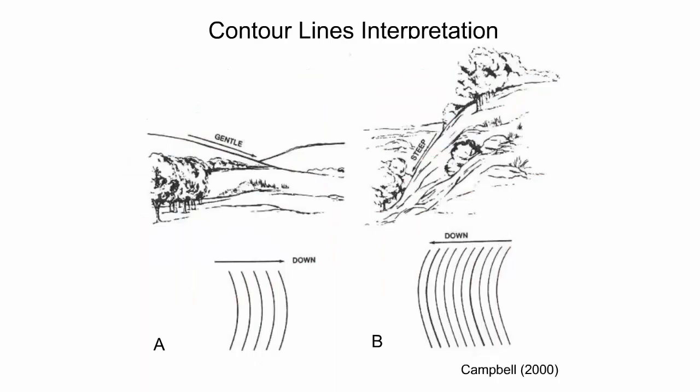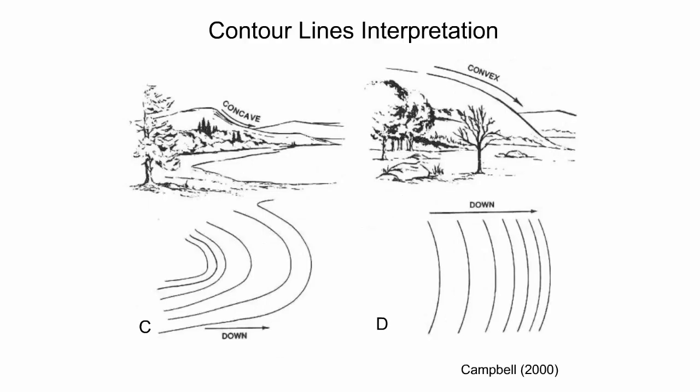Interpreting contour lines provides plenty of information about the topography of the area being mapped. If two maps have the same contour interval, then the horizontal spacing between contour lines will indicate the relative slope. The contour lines in figure A exhibit a uniform, gentle slope, while the contour lines in figure B exhibit a uniform, steep slope.